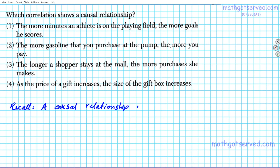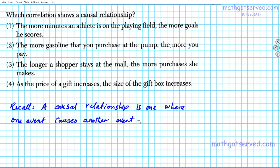A causal relationship is one where one event causes another event to occur. You can think of it as, like the name suggests, a cause and effect relationship.